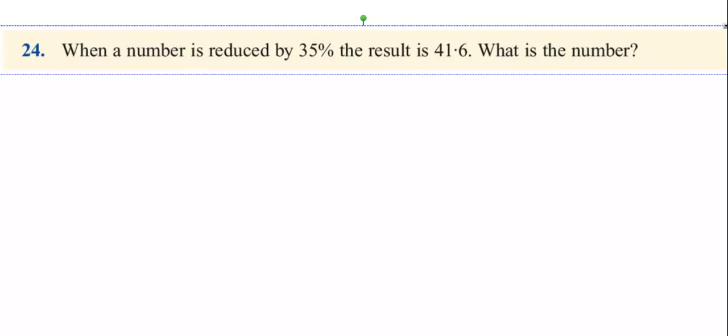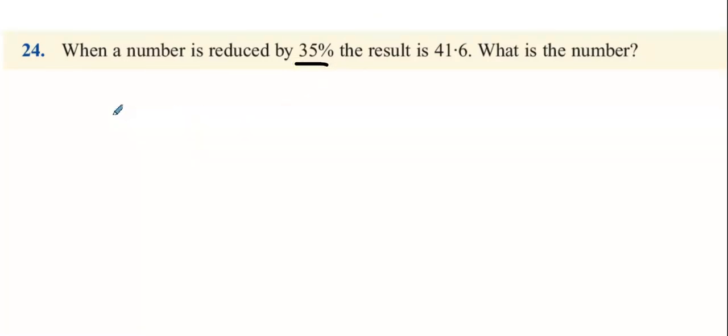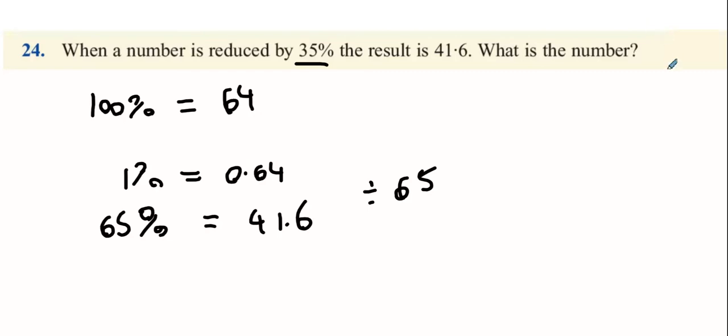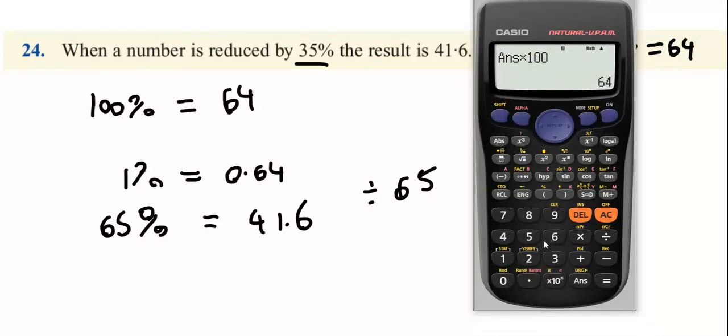Question 24: When a number is reduced by 35%, the result is 41.6. What is the number? You start at 100% but you're reduced by 35%, which puts you on 65%. So 65% is 41.6. Divide by 65 to find 1%: 41.6 divided by 65 is 0.64. Multiply by 100 and you get 64.